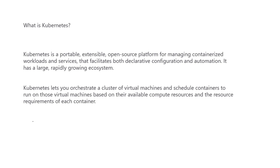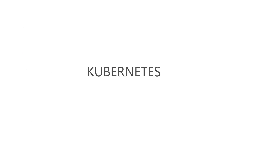Regarding how to pronounce Kubernetes - some people say 'Kubernetes', some say 'Kubernets'. Between the K and S there are 8 characters: 1, 2, 3, 4, 5, 6, 7, 8. So if you replace those 8 characters with the number 8, you get K8s. So many people call it K8s. You can pronounce it as 'Kubernetes', 'K8s' - all these terms are acceptable.